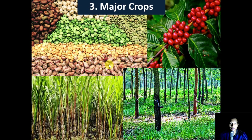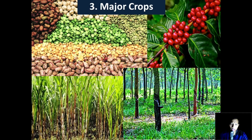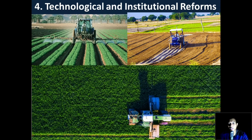Next, major crops — we'll discuss the major crops grown in India, including food as well as non-food crops. Under grains: rice, wheat, millet, maize, and pulses. Under food crops other than grains: sugarcane, oilseeds, tea, coffee, and horticultural crops. Under non-food crops: rubber, fiber crops such as cotton and jute.